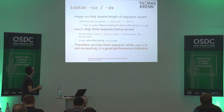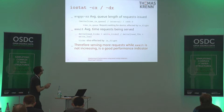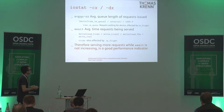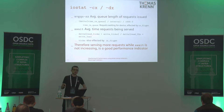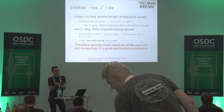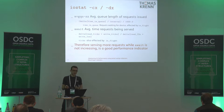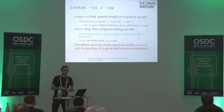When using IOStat with certain options, you get information about the average queue length of a request being issued and the average time requests are being served. When you can serve more requests in parallel while the waiting time is not increasing, this is a good performance indicator. For example, when using an SSD and issuing eight IO commands in parallel instead of one while waiting nearly the same amount of time, it's a good indicator.